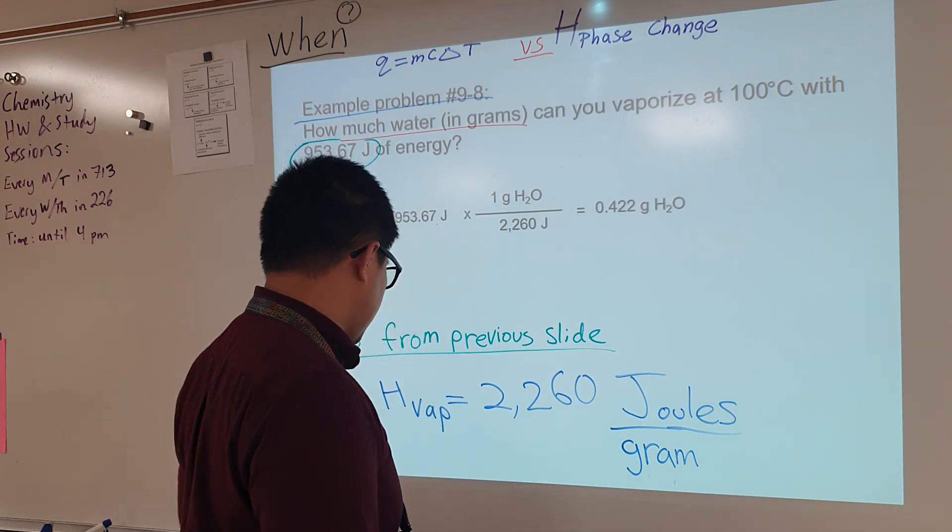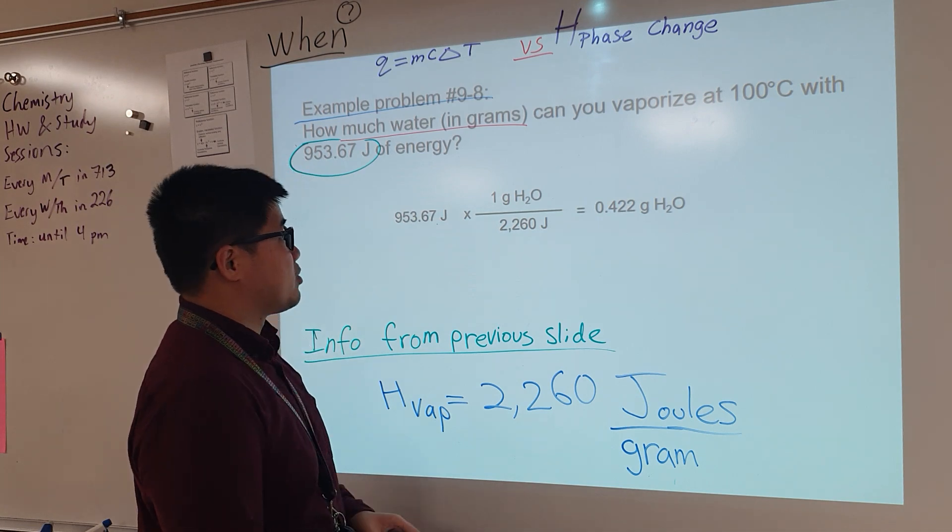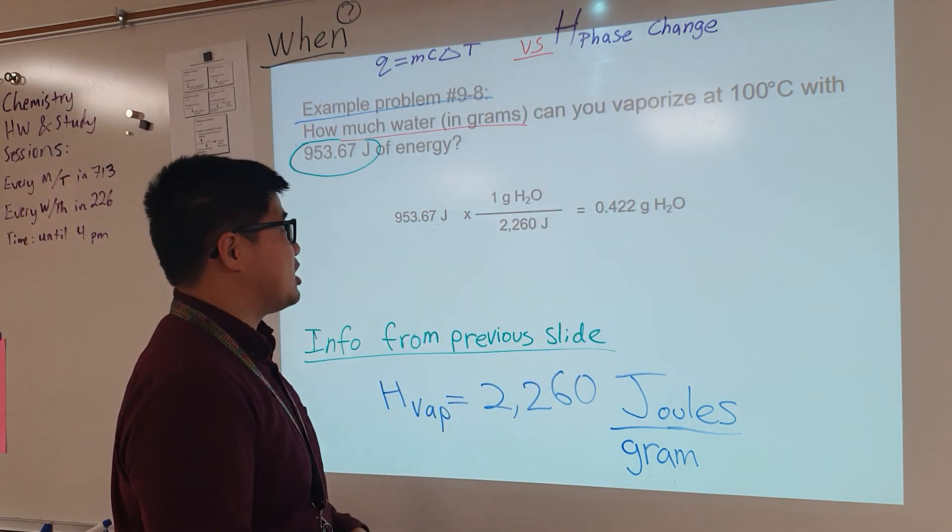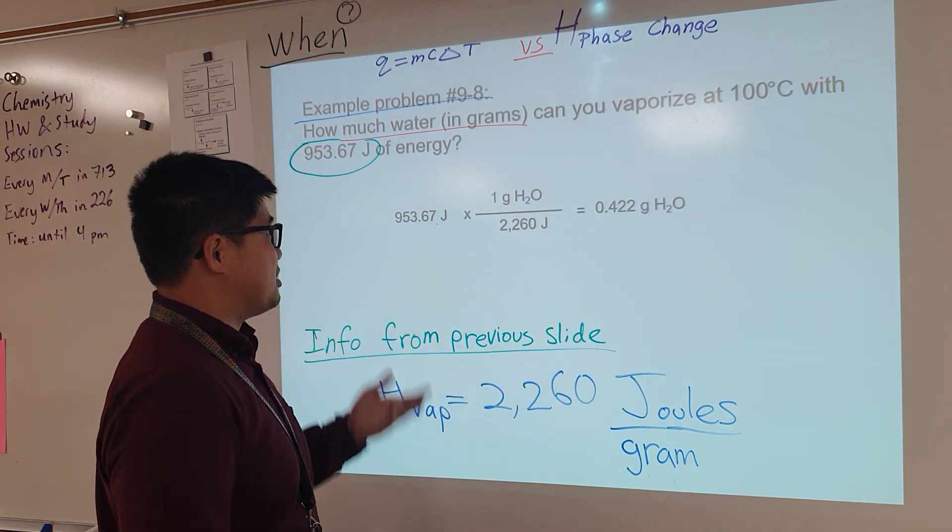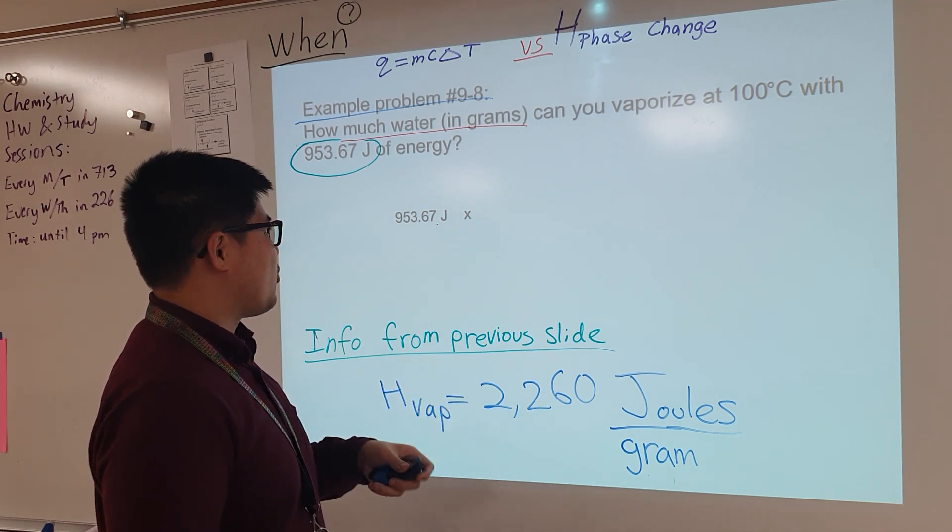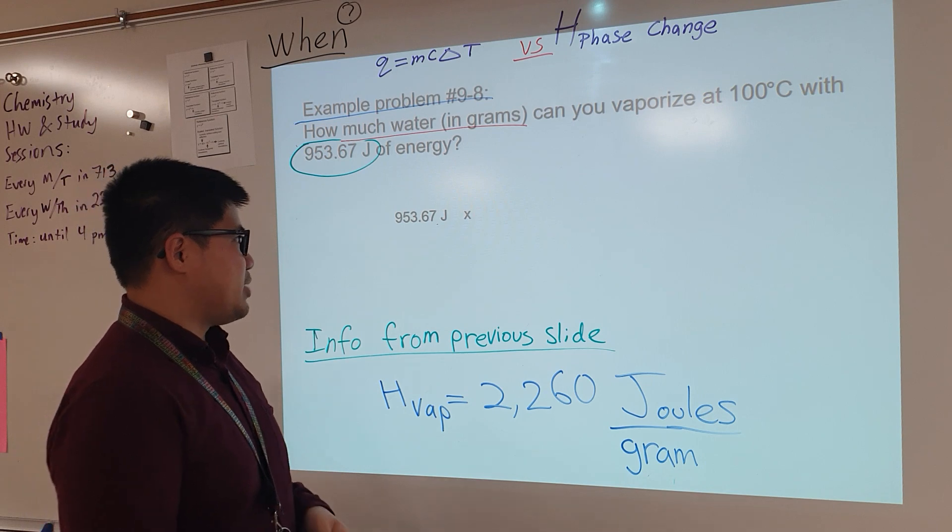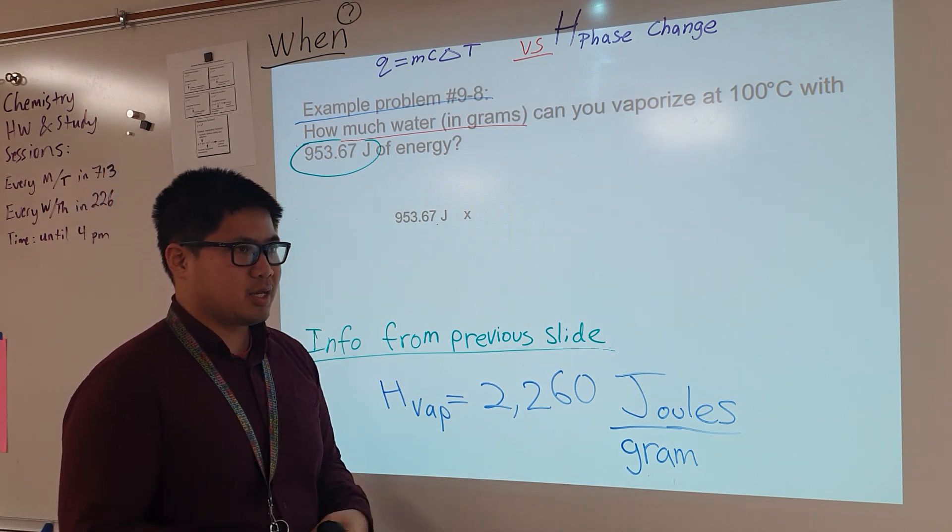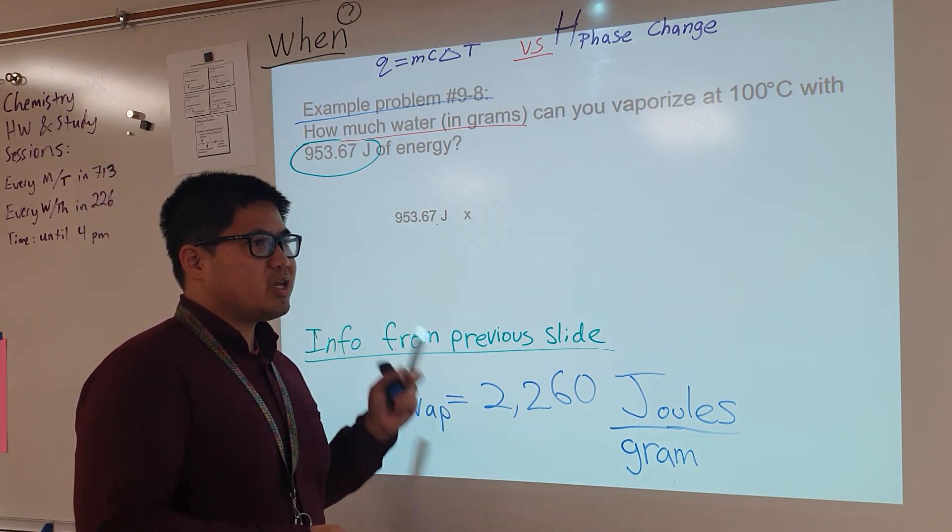And what I want to do is talk about what we're going to start off with. If we can't start off with 100 degrees Celsius, well, what about this? This is the only thing that we have. And we're going to do that right here. 953.67 joules. And the question is, what can we do with that?